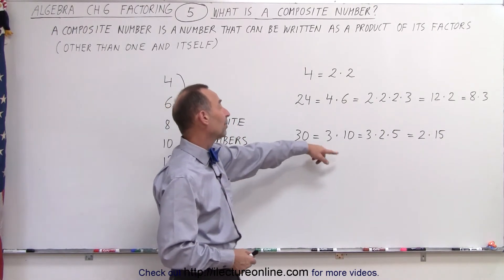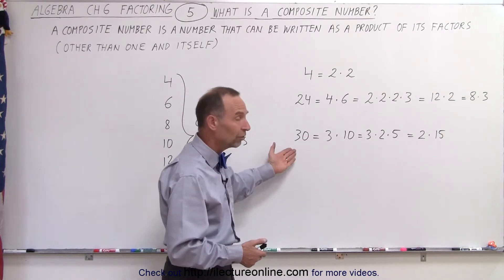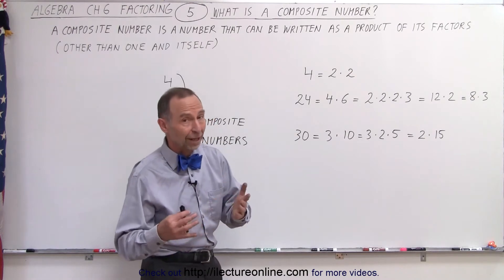And 30 can be written as 3 times 10, or 3 times 2 times 5, or 2 times 15. And again, therefore, 30 is a composite number. It's not a prime number.